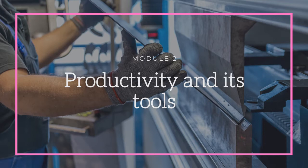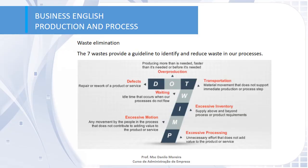After we've learned all the concepts related to production management, we are going to move to productivity and its tools. The first tool, which is the base for lean manufacturing, is related to the seven wastes. We have to identify them and eliminate or reduce them in our process. They are: overproduction, transportation, defects, waiting, excessive inventory, excessive motion, and excessive processing.